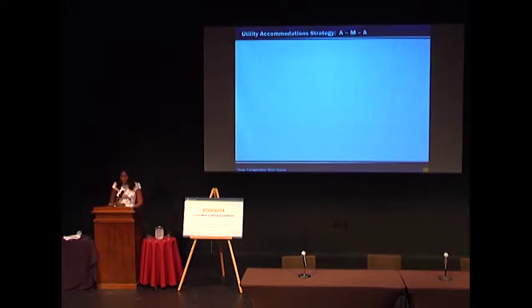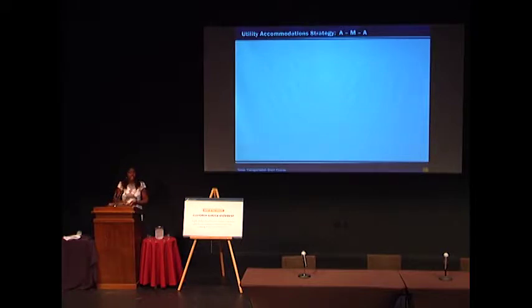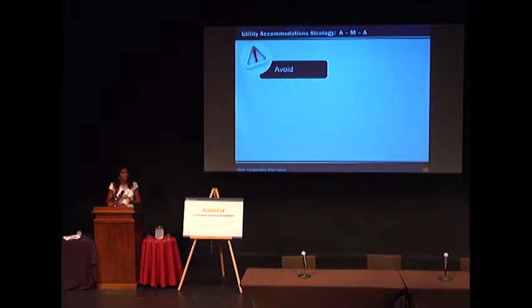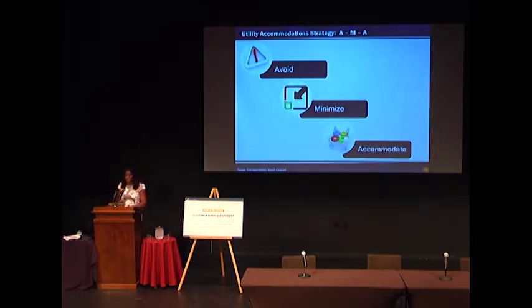I'd first like to talk about the utility accommodation strategies that we are focusing on in the ROW 100 course — that's identifying and managing utility conflicts, taught in partnership with TTI. Cesar Carroga is the instructor. A part of the accommodation strategy is for us to prioritize how we consider dealing with utilities. The first priority is to try and avoid utility conflicts if at all possible. In instances where we can't avoid conflicts, we then want to minimize any impacts. And once we've tried to avoid and minimize, the last resort is to accommodate those impacted utilities.